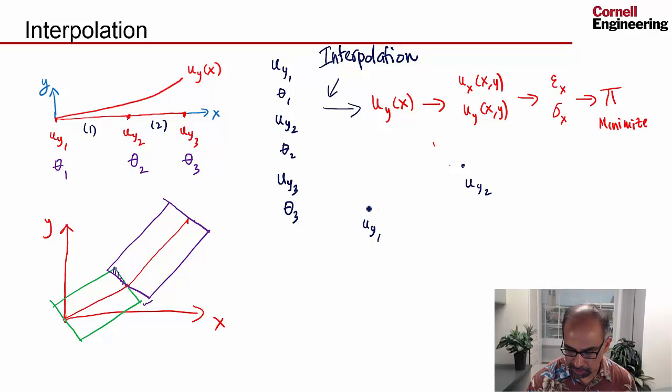Then the interpolation would be the relation for u_y of x in element 1, going to be a linear variation. So it's going to be something like a plus bx. That's going to be the equation of the line. And we saw that having a linear variation and constant slope creates this kind of a non-physical thing. So that's not the right way to do it.